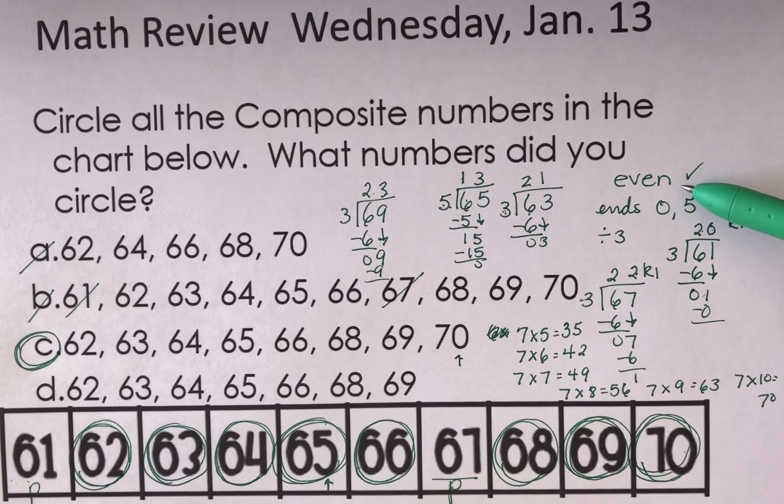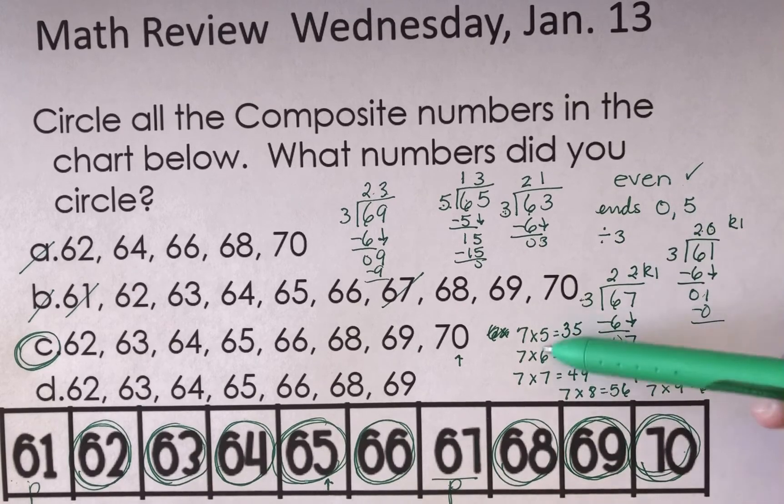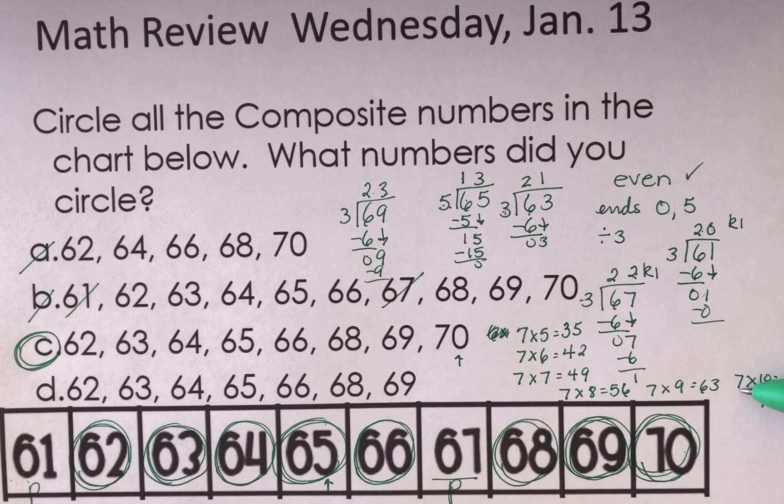All right, ladies and gentlemen, so you want to check to see if numbers are even. If they end in a zero and a five, which means are they divisible by five? Are they divisible by three? Then what's left over? See if it's divisible by seven. Use your multiplication tables with the sevens or by 11.